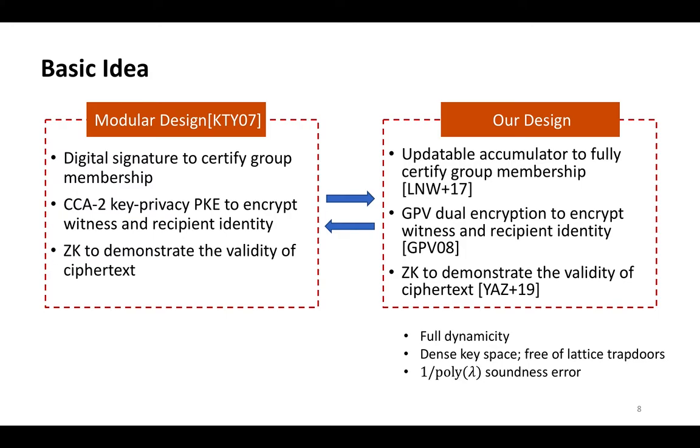Our basic idea is like this. According to the modular design presented by KDWA, a group encryption scheme can be constructed from a secure digital signature, a CCA-2 key-private public key encryption, and a zero-knowledge argument. These are in our design. For our motivation is taken to achieve the full dynamicity, we utilize the Merkle accumulator to fully certify group membership. The GPV dual encryption is used to encrypt witness and recipient identity. Finally, the Yang et al.'s zero-knowledge argument is used to demonstrate the validity of ciphertext. By these designs, we achieve full dynamicity and a dense key space, which results in a scheme with enhanced efficiency.